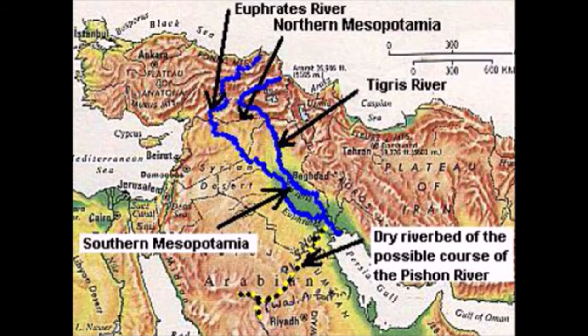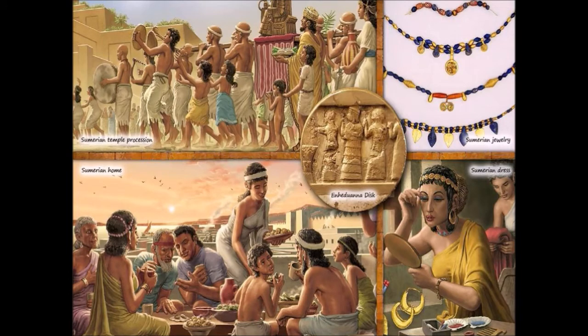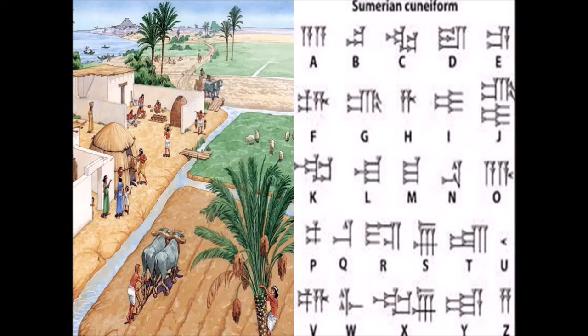The Sumerians were the oldest civilization. They believed they originated from Central Asia. They developed the cuneiform writing system. The kings acted as chief priests. Cuneiform writing was in wedge shape.